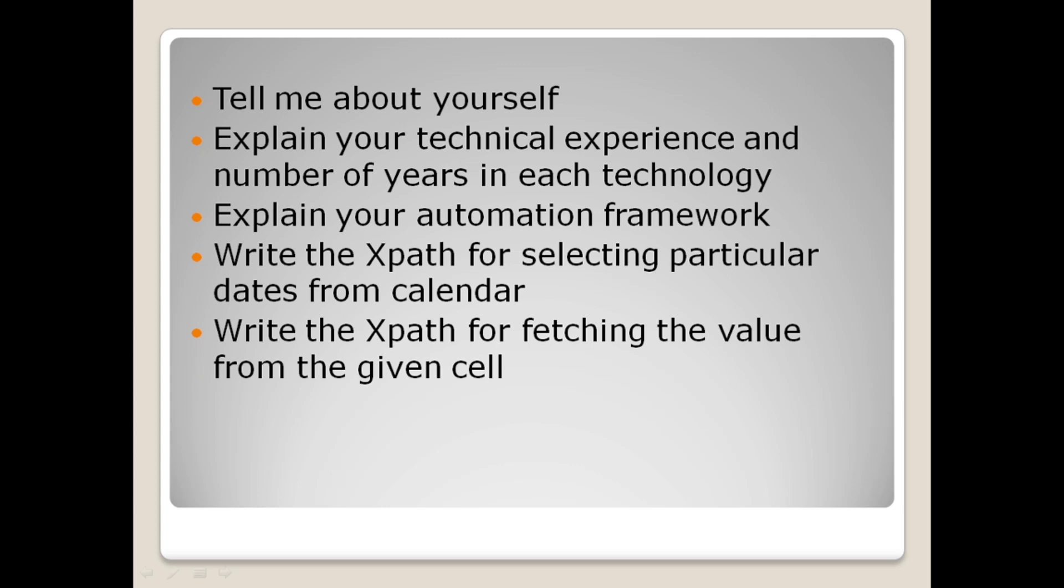The next one is explain your technical experience and number of years in each technology. So here we have to explain about your skill set. If you are working on automation testing or manual testing, both experience you can mention. Suppose you have eight years of experience, you have to mention four years in automation testing or four years in manual testing, overall experience is eight years. And if you have mobile automation skills or API automation or any other skill set that you want to mention, everything you should be highlighting in this section.